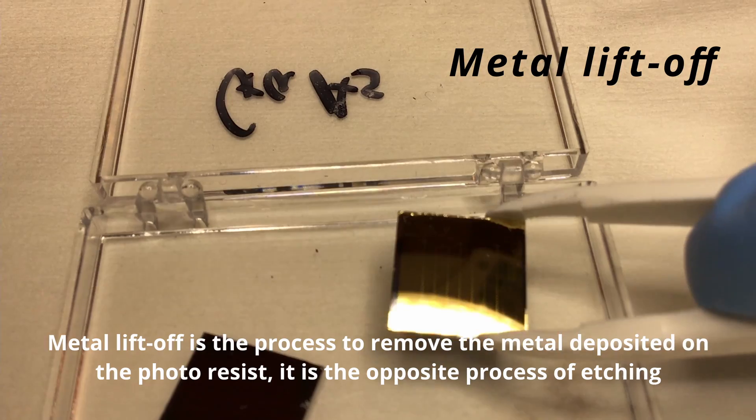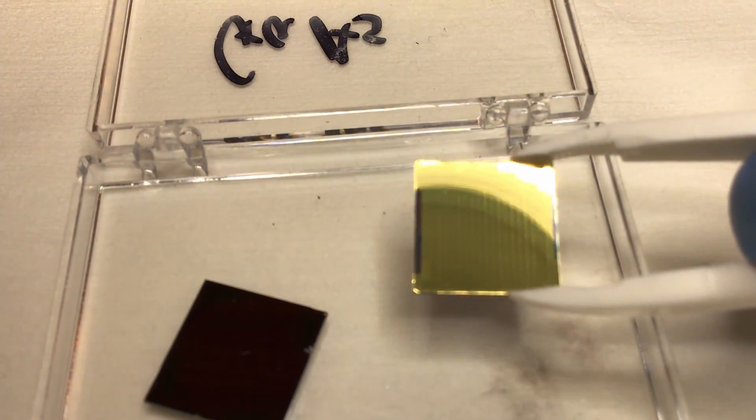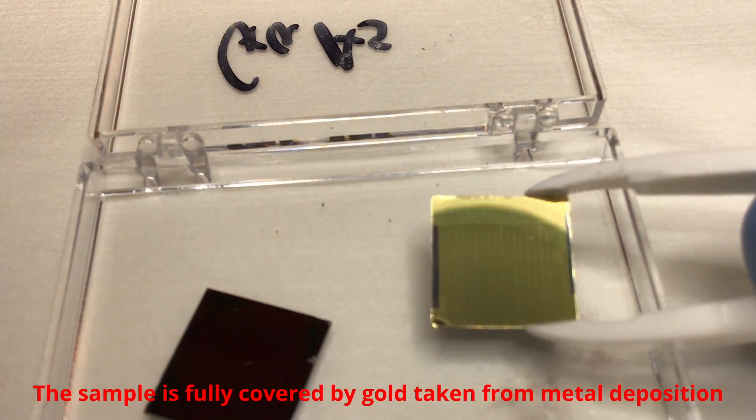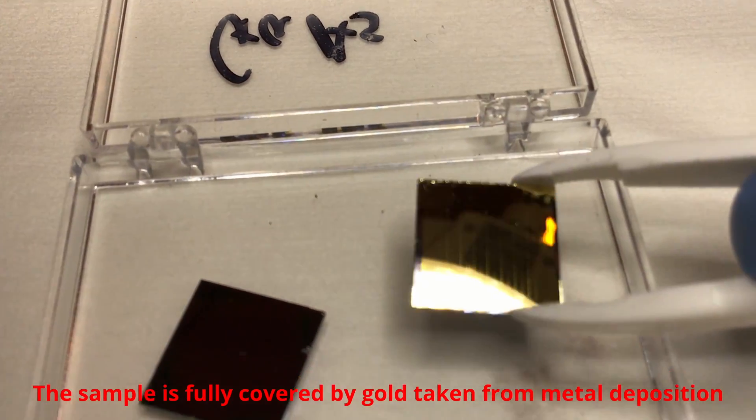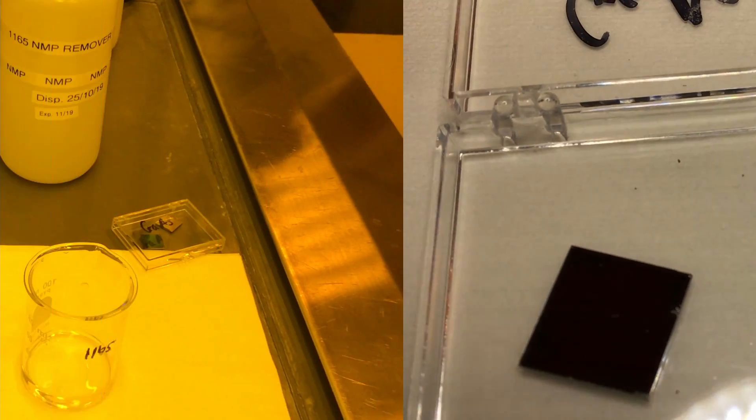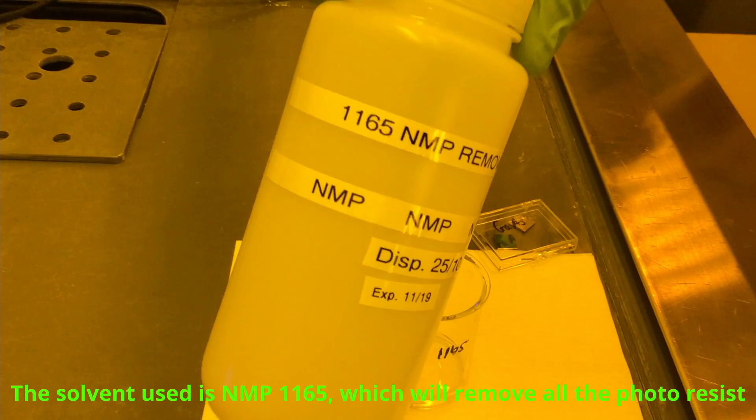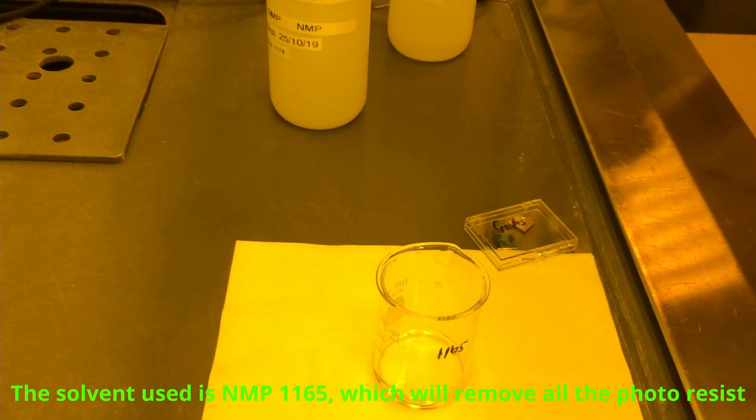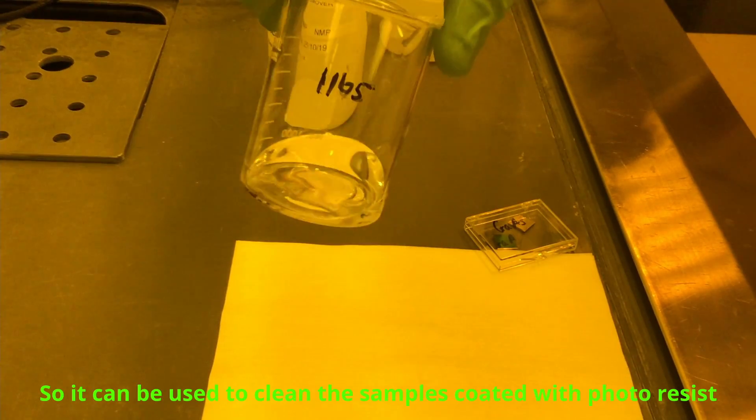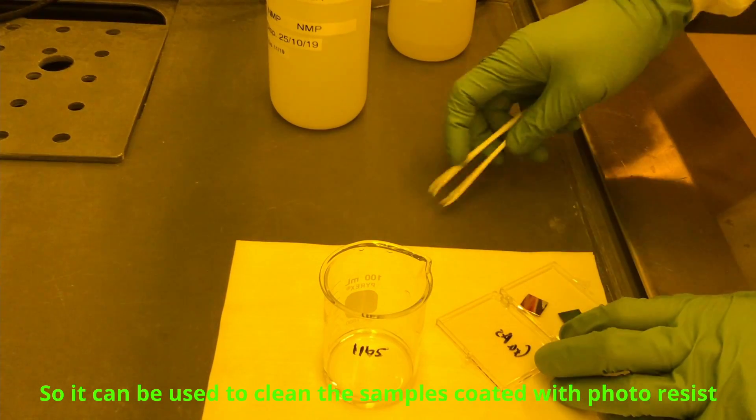Metal lift-off is a process to remove the metal deposited on the photoresist. The solvent used is NMP 1165, which dissolves the photoresist. The metal coated on the photoresist will be removed when the photoresist dissolves into the remover.